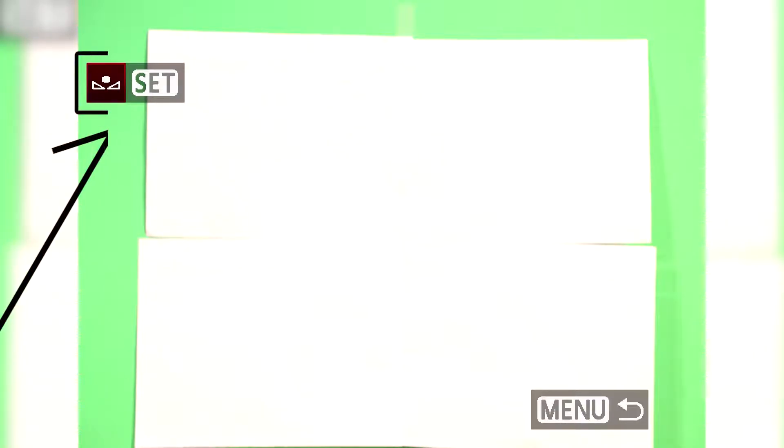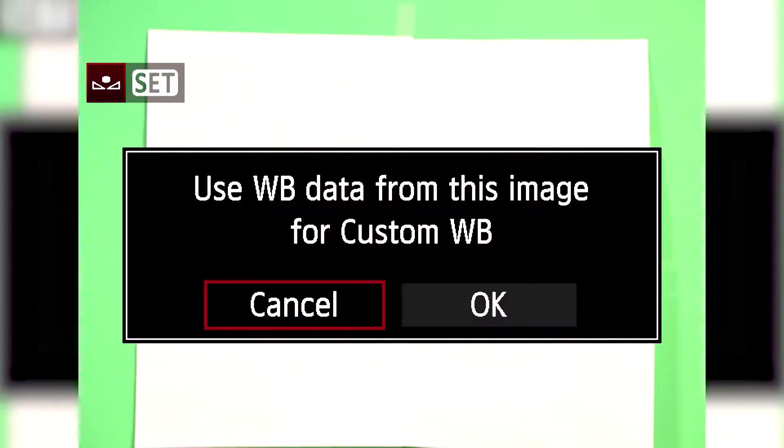Find the image of the white piece of paper and you will notice on the top left section of the camera screen that there is a white balance icon. Click the Set button and scroll over and click OK.